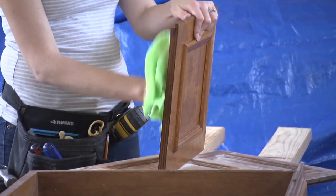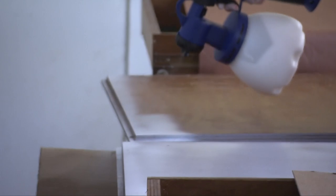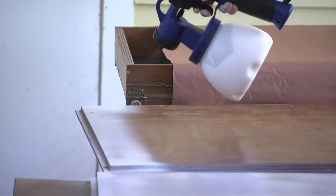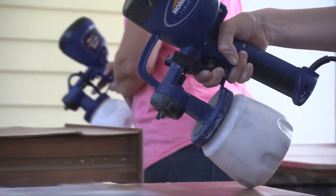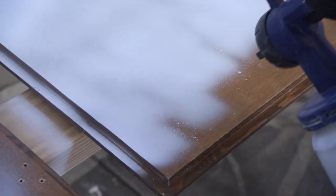If there is any greasy residue left after sanding, mineral spirits will remove it. The next step is applying the primer, which blocks stains and promotes adhesion. We're using a high volume low pressure spray gun to apply both the primer and the paint.